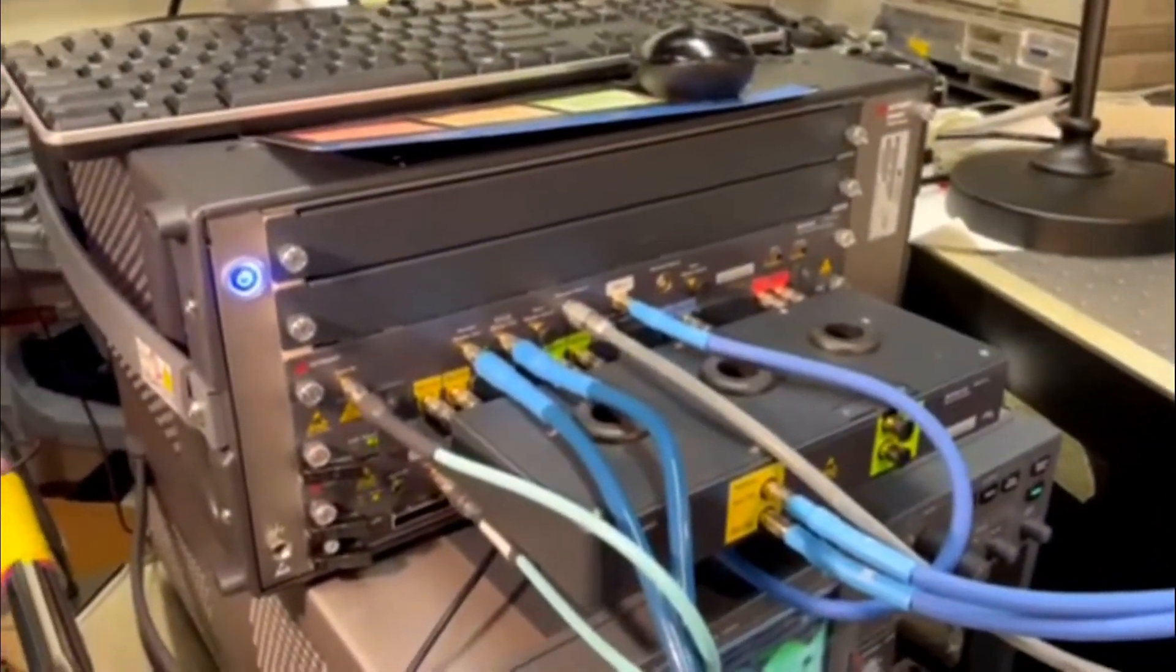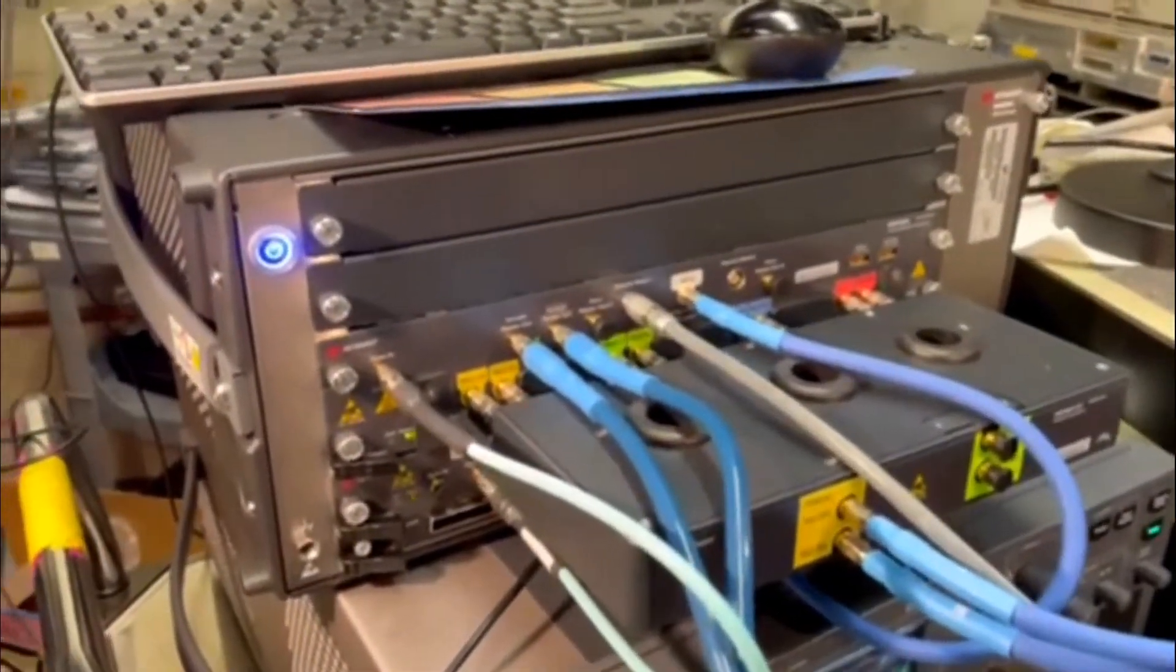Here we're showing a lab demo of the 283 VCS uncooled 200 gig EML being tested as a chip-on-carrier with probes, driven by a 112 gigabaud PAM4 signal at 20 degrees C to demonstrate the uncooled performance. The signal is coming from a Keysight AWG using a legacy SHF amplifier providing about 1.1 volt peak-to-peak to the device.